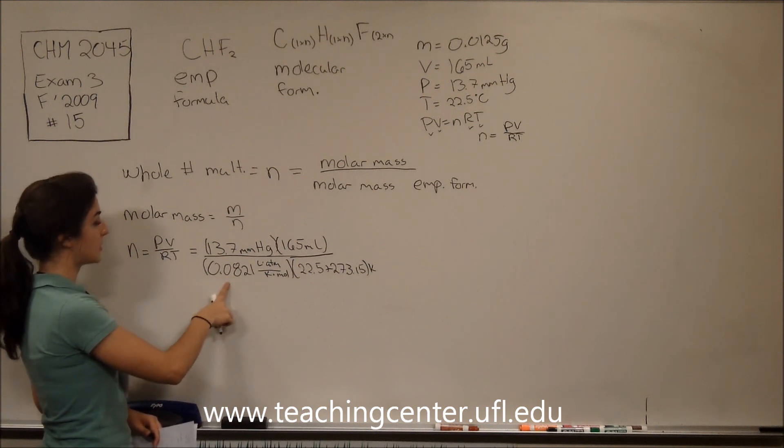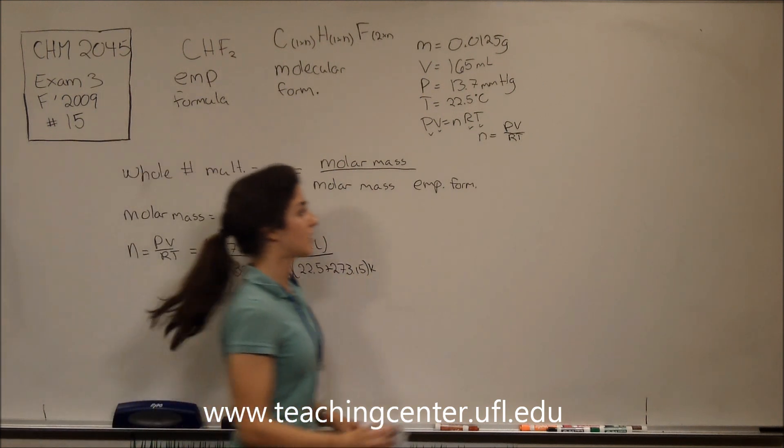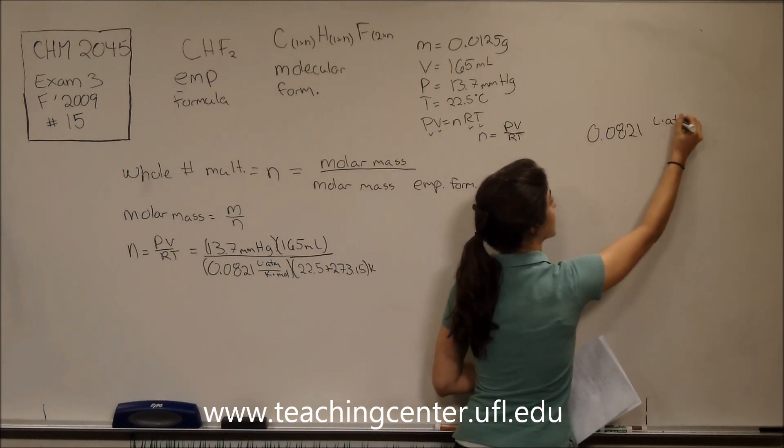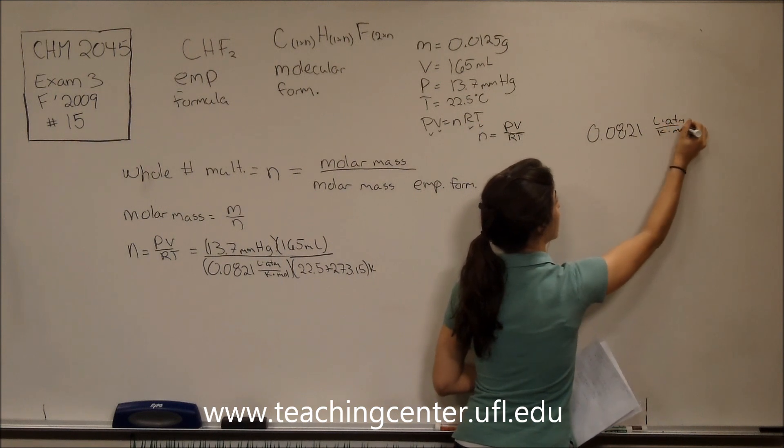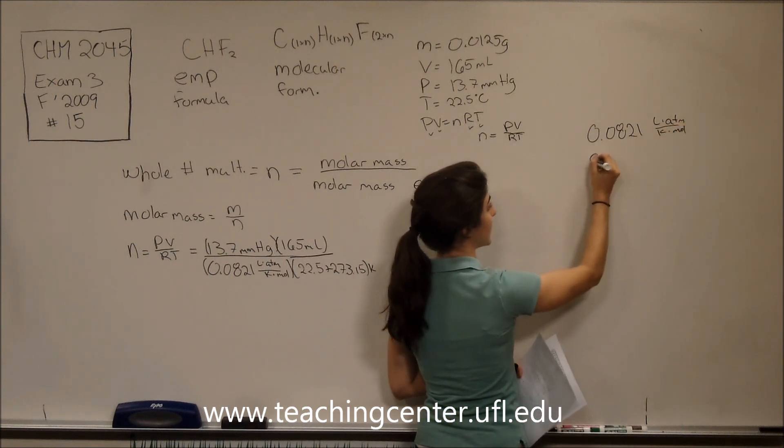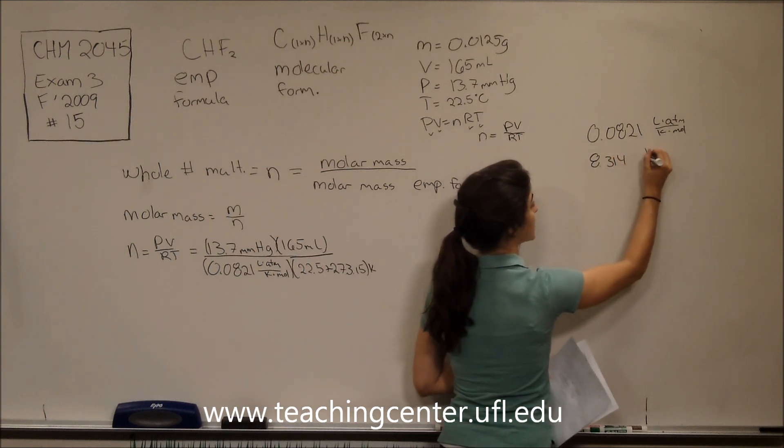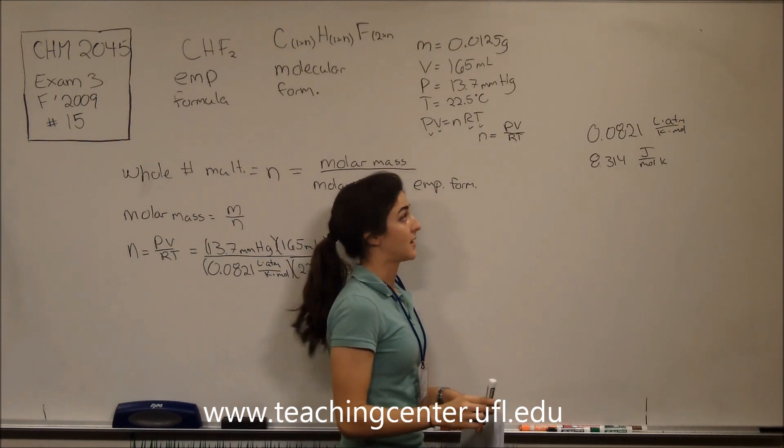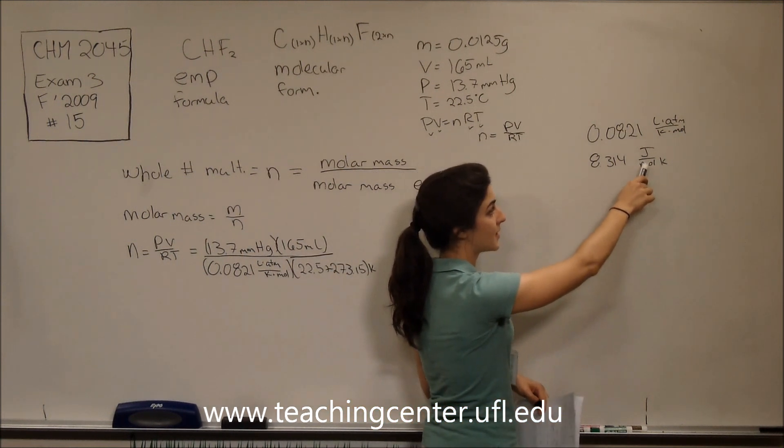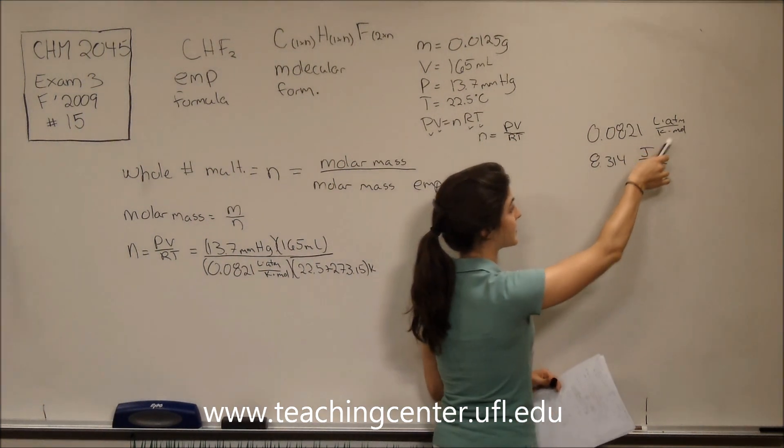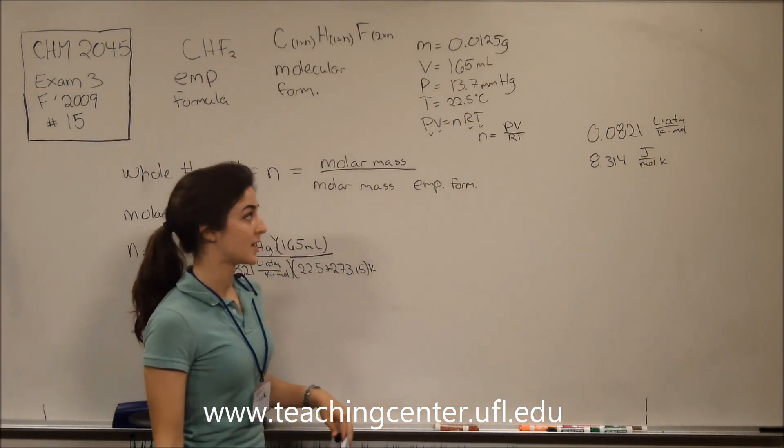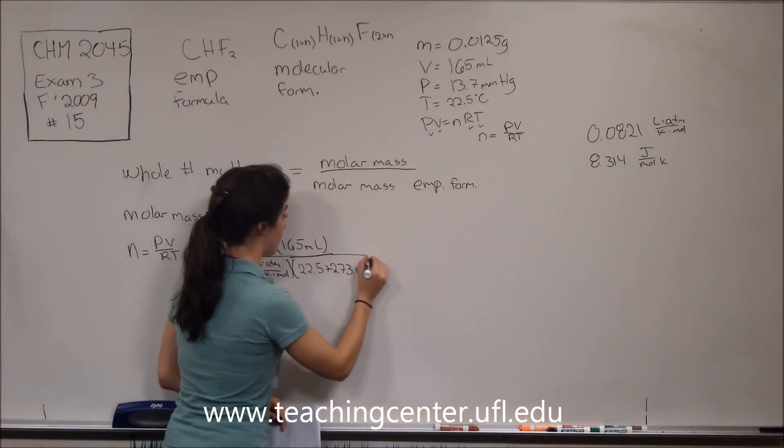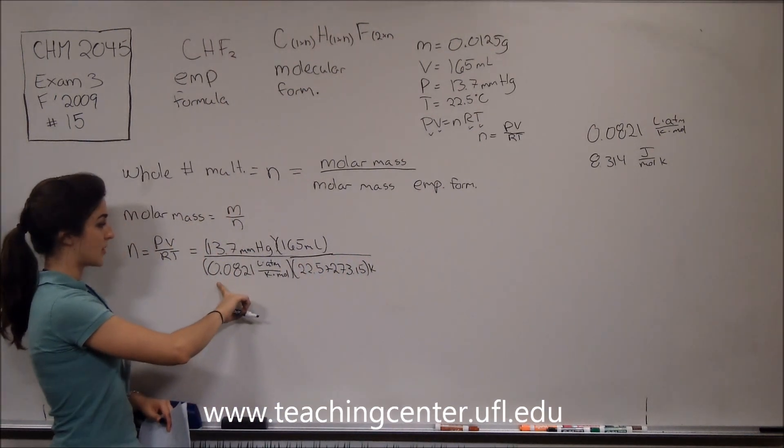Something you may wonder is how we knew what R was, because we have two values of R. We have 0.0821 liters times atmosphere over Kelvin times mole, but we also have 8.314 joules per mole Kelvin. Looking at the units determines which one we need to use. This one deals with energy because it has joules in it, and this one has liters times atmosphere over Kelvin times mole. So we're going to use it in our PV=nRT equation. So that's why we use 0.0821 over here.